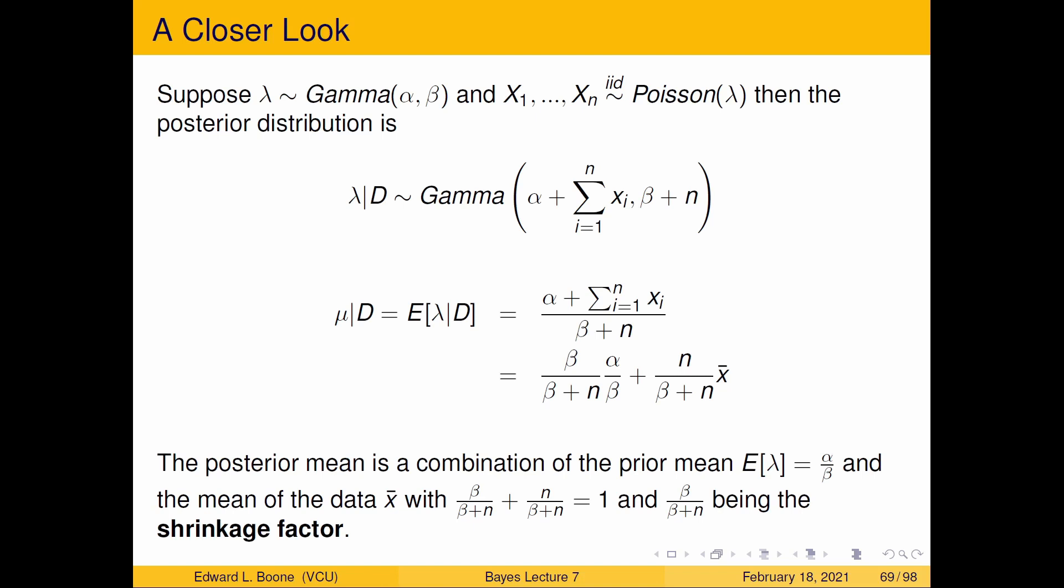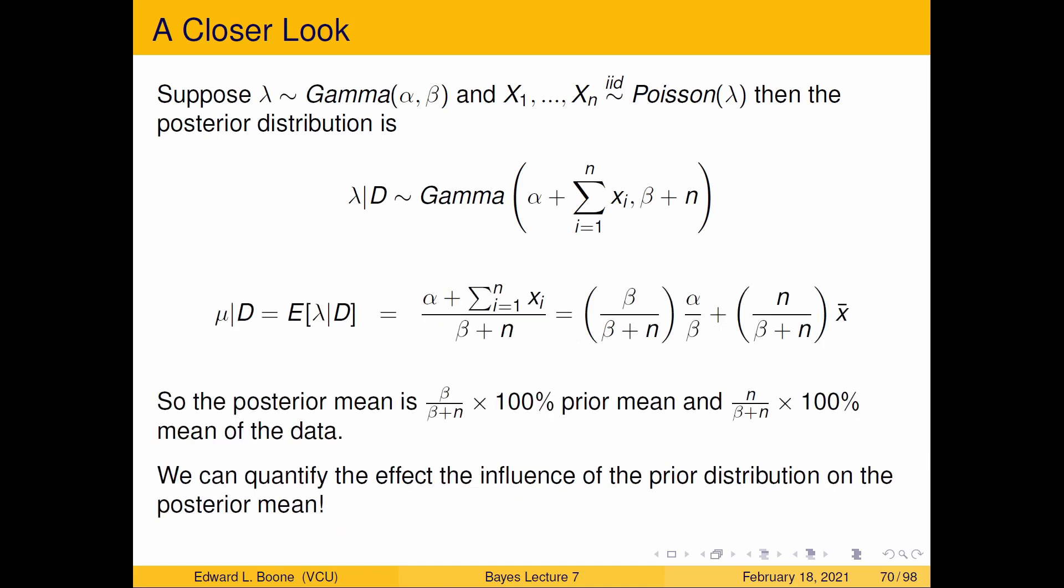Based on the data, we have the data mean being shrunk towards the prior mean. It's just called the shrinkage factor. And it tells you percentage-wise how much that happens.